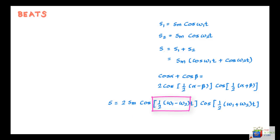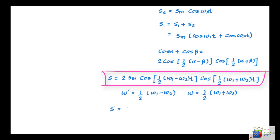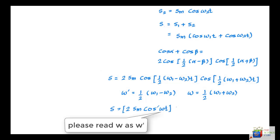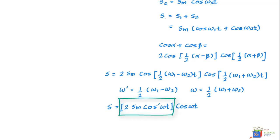Let us say if we term this part as ω', so ω' equals (ω1 - ω2)/2, and ω equals (ω1 + ω2)/2. Then we can write this equation as S = [2Sm cos(ω't)] cos(ωt). We can treat this equation as a resultant wave that has ω as the angular frequency, and this part as the amplitude that varies with time at an angular frequency ω'.